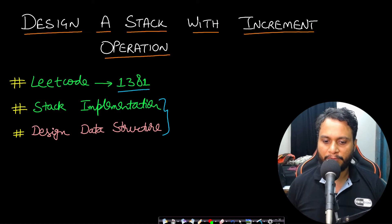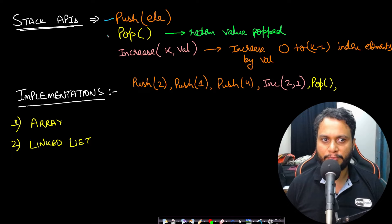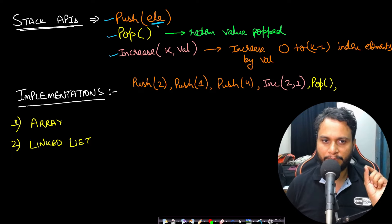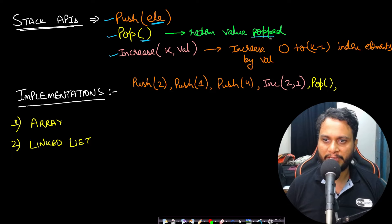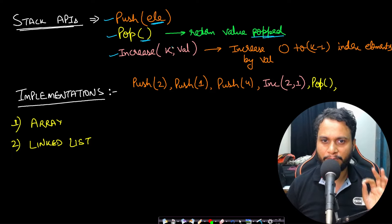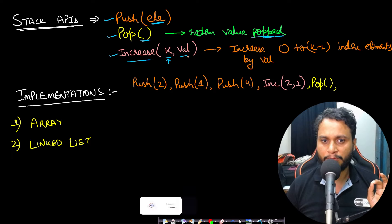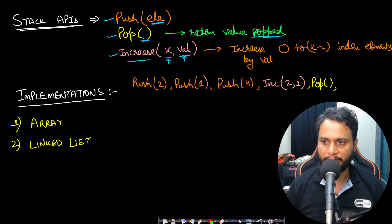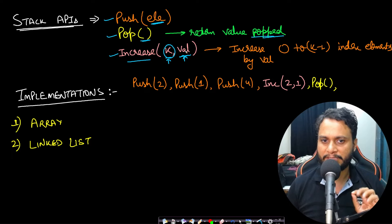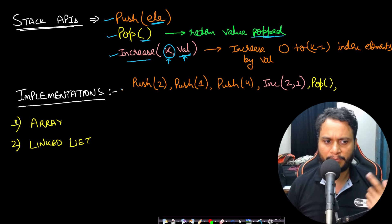Let's look at an example for better understanding. In push, we push the element on top and always track stack overflow. In pop, we return the popped value or minus one if the stack is empty. In the increment API, we increase the value of the first k items by val. If there are fewer than k items, we increment all items in the stack.